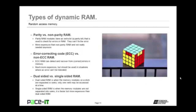There's also parity and non-parity RAM. Parity RAM modules have an extra bit — a parity bit — used to check for errors in RAM. It can't fix errors, but it can find them. It's more expensive than non-parity RAM and not really needed anymore because applications check for errors now. Then there's error-correcting code RAM, ECC RAM. ECC RAM can detect and recover from errors in memory. It's much more expensive than standard RAM but should be used in situations where an error can't be tolerated.